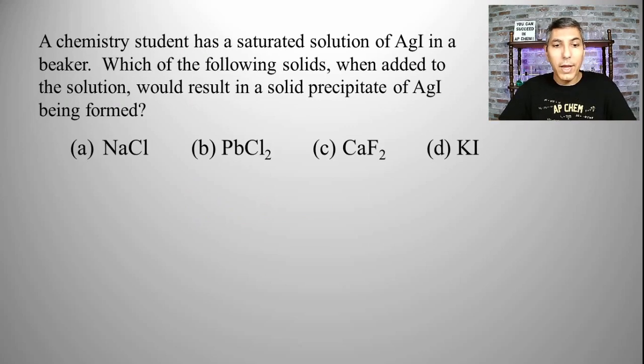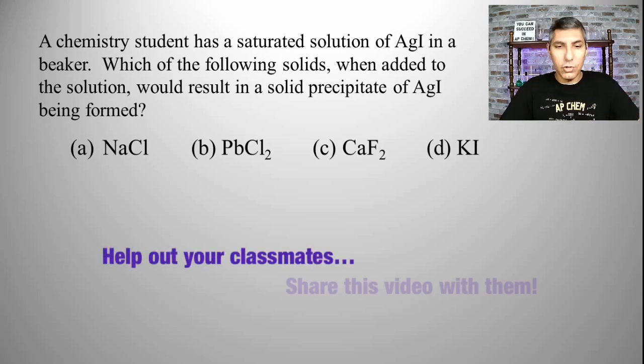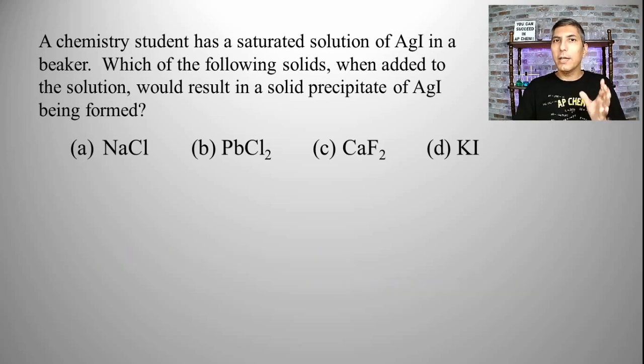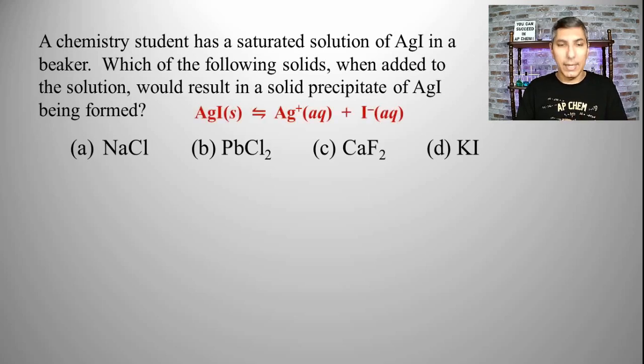Here we have a multiple choice question. A chemistry student has a saturated solution of AgI in a beaker. Which of the following solids, when added to the solution, would result in a solid precipitate of AgI being formed? As we think about this, let's write out the equation for the dissociation of silver iodide. Once again, we have this saturated solution.